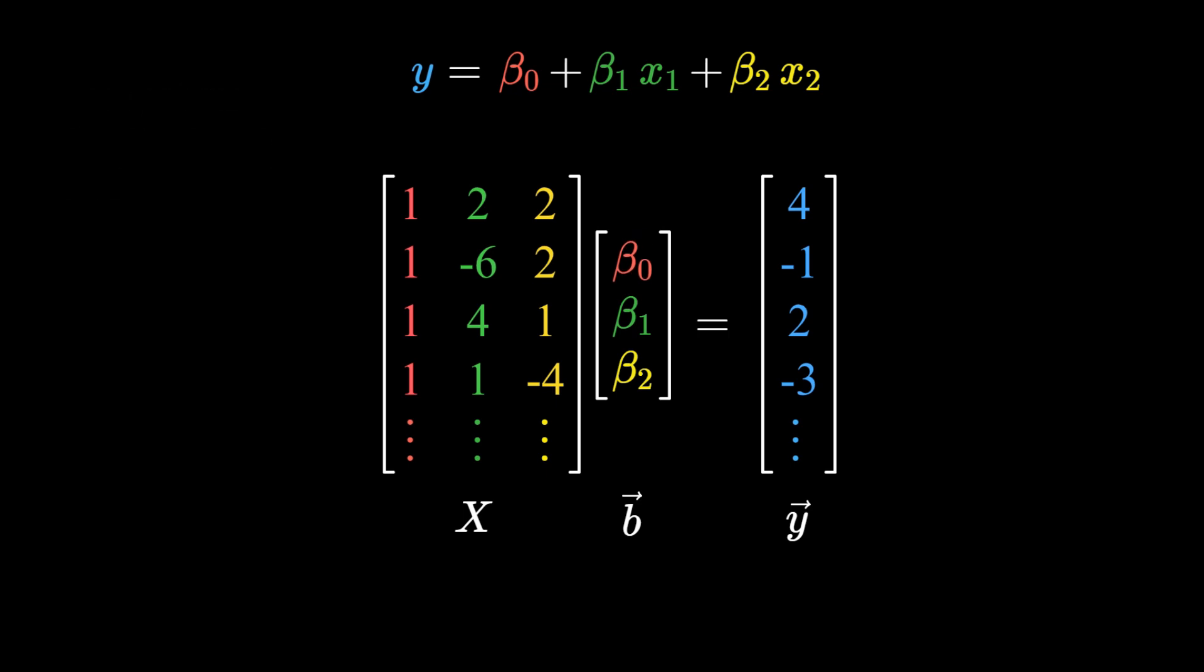On the other hand, each row of the matrix represents one single sample of our data. If we have n samples, then there will be n rows in the data matrix.